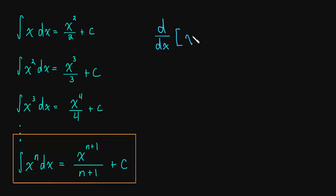The derivative of x to the n is equal to n times x to the n minus 1. So you bring the power down and then you subtract 1 from the power.